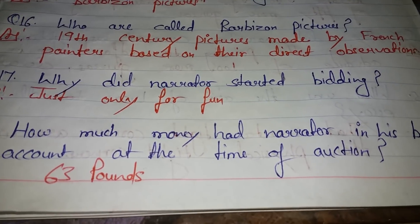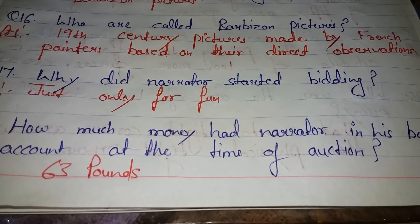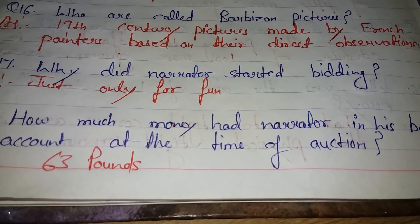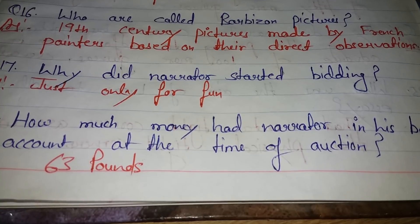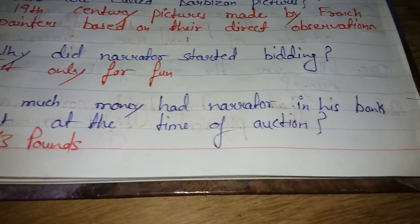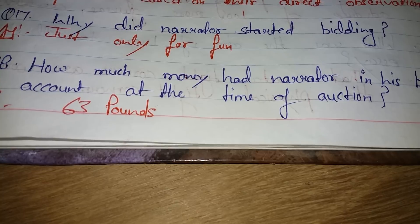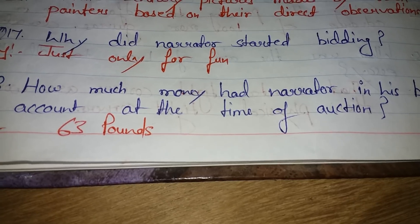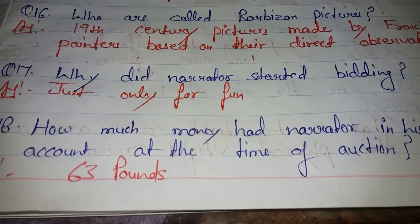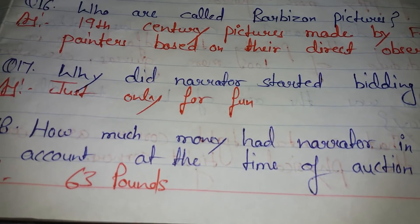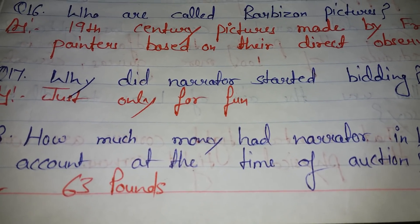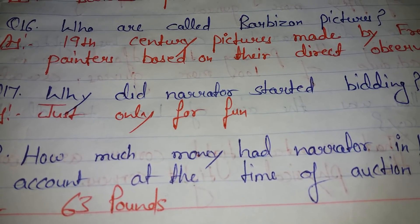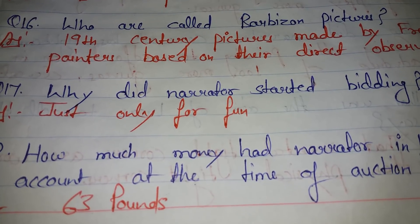Why did the narrator start bidding, knowing he didn't have enough money? Just only for fun — the narrator was bidding only for fun. How much money did the narrator have in his bank account at the time of auction? He had only 63 pounds in his bank account, not in his pocket.